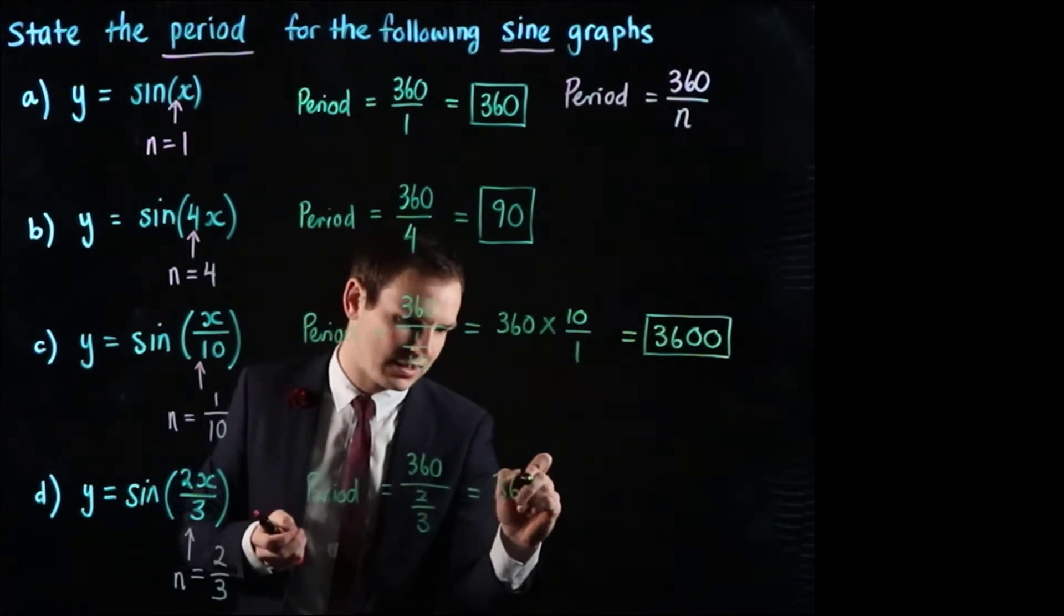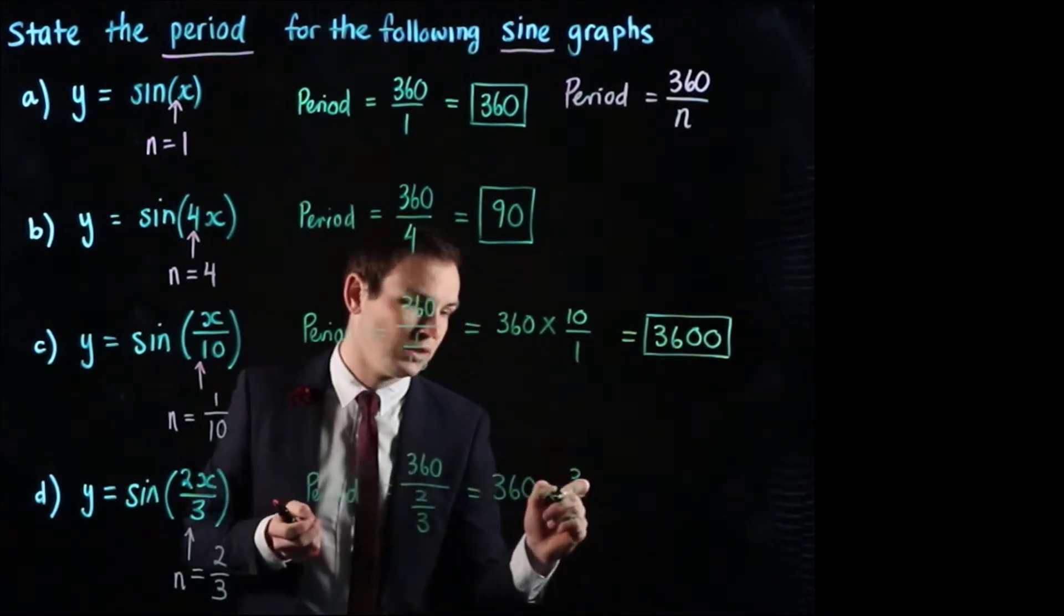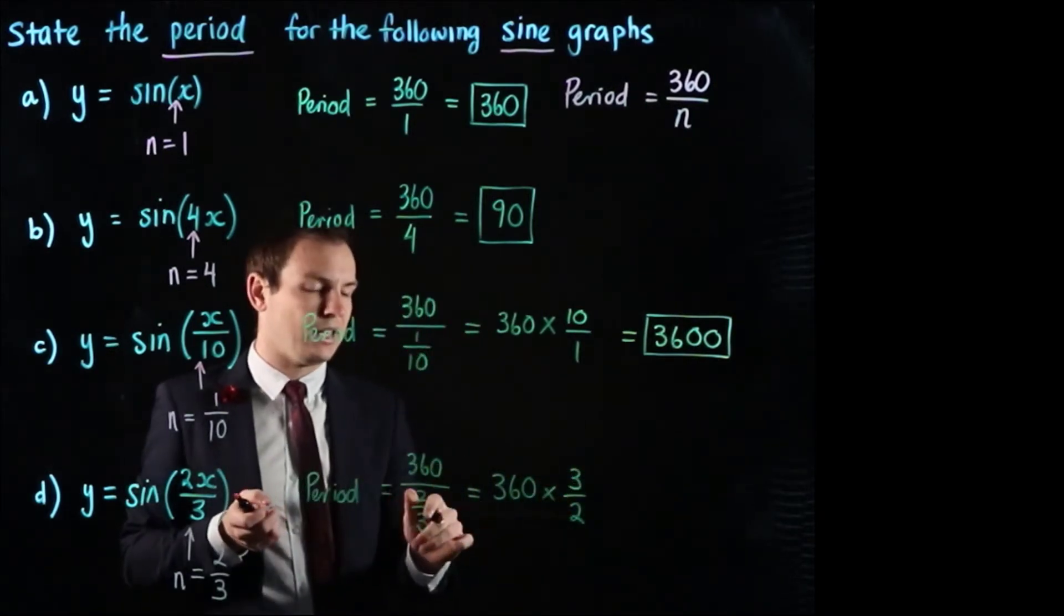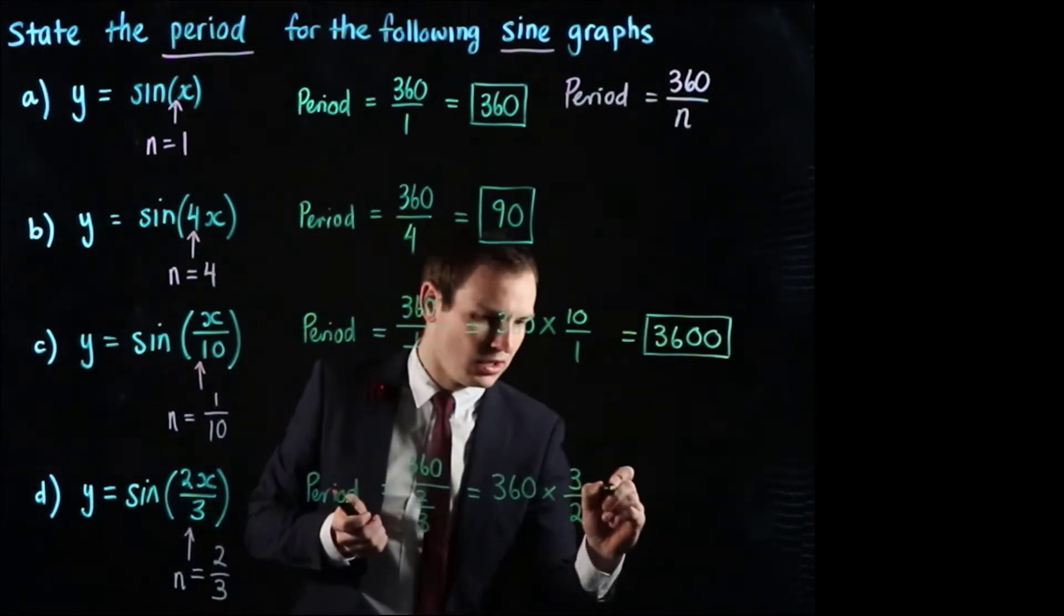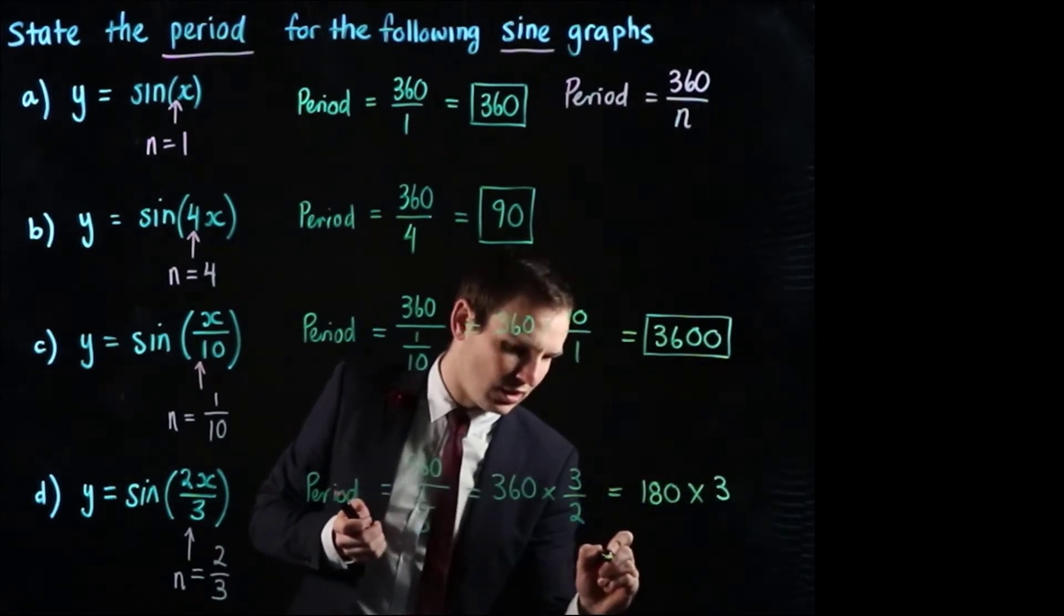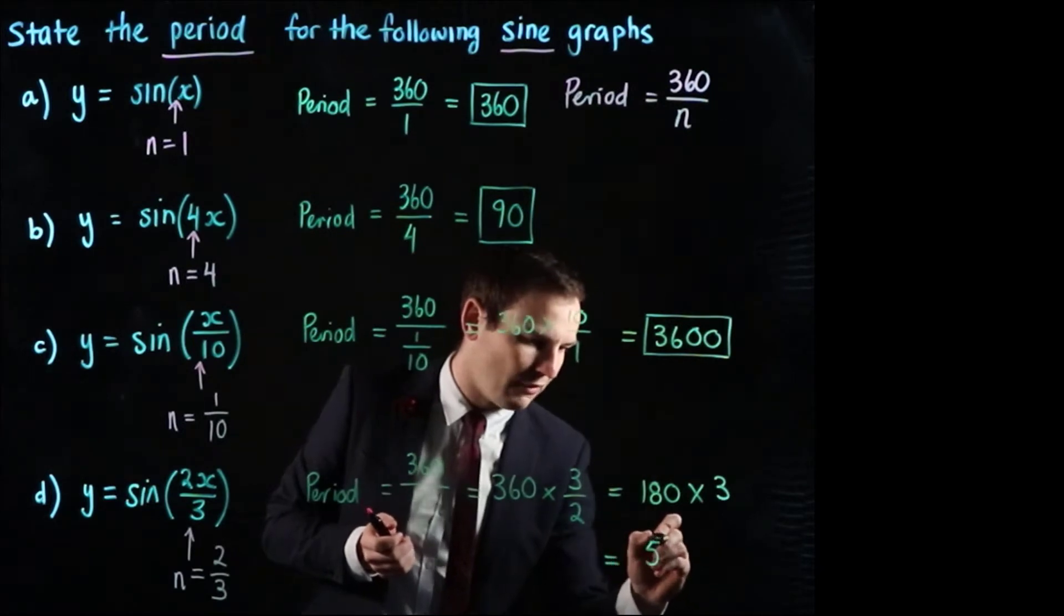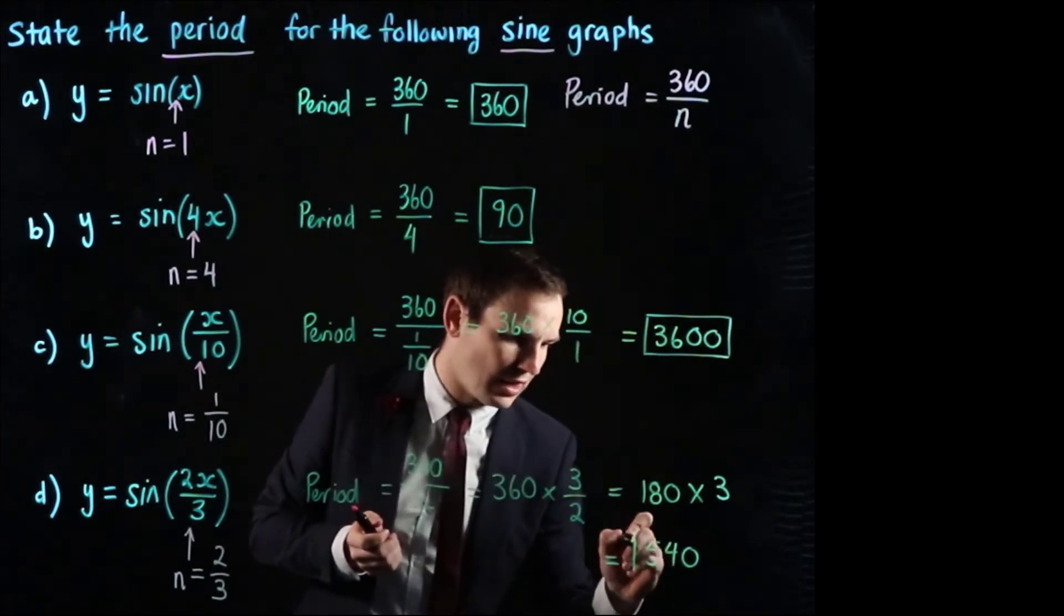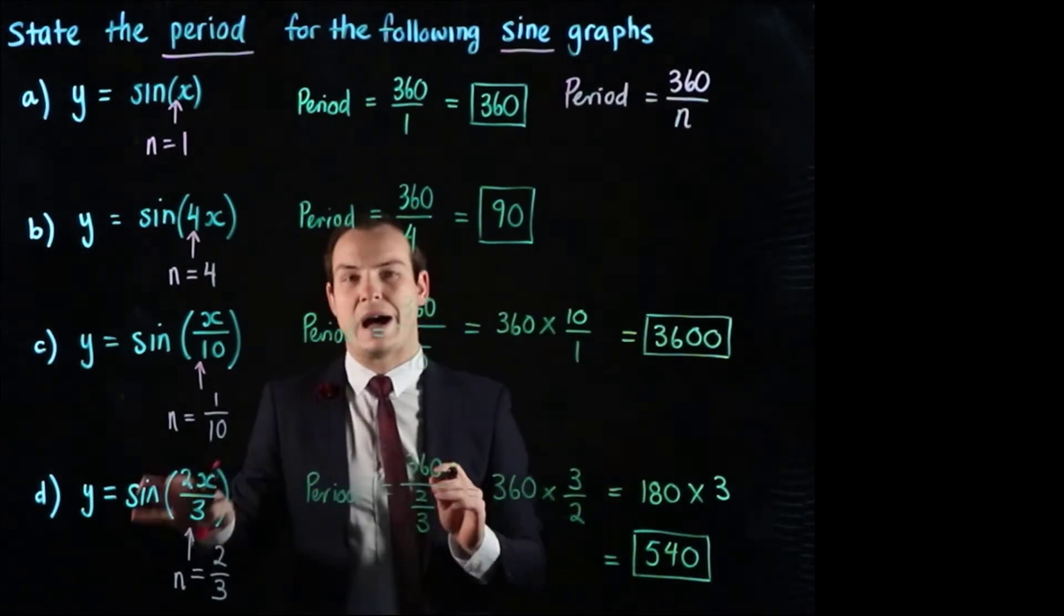So this is going to equal 360 times 3 over 2, and now to help me calculate this I'm actually going to do 360 and I'm going to divide by the 2 first so that will just give me 180 multiplied by 3 so that the final answer is simply 180 multiplied by 3 which is 540. So that is going to be the period for part d.